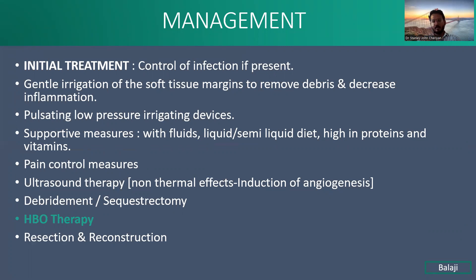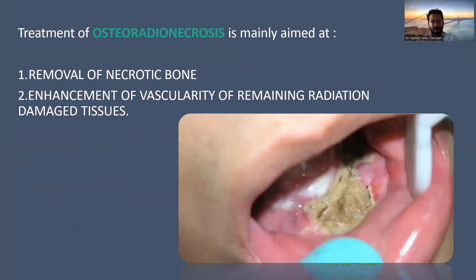You can give hyperbaric oxygen therapy, and then resection and reconstruction if none of the earlier measures work. The treatment of osteoradionecrosis is mainly aimed at removal of necrotic bone and enhancement of the vascularity of the remaining radiation-damaged tissues.